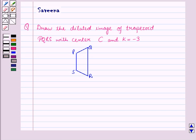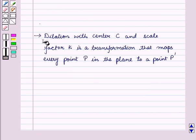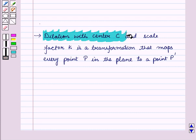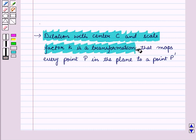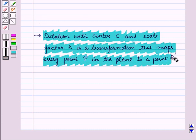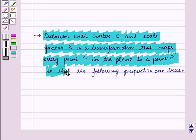Before starting the solution of this question, we should know some results. A dilation with center C and scale factor K is a transformation that maps every point P in the plane to a point P' so that the following properties are true.